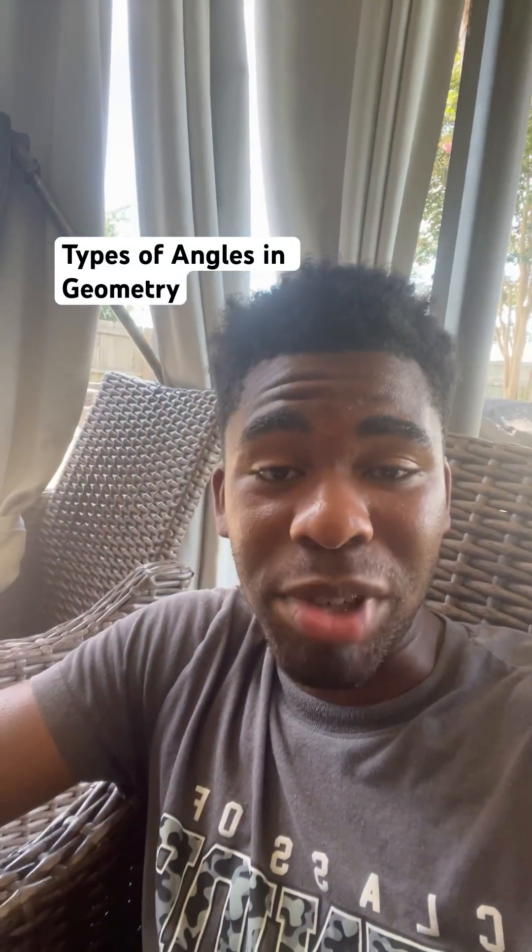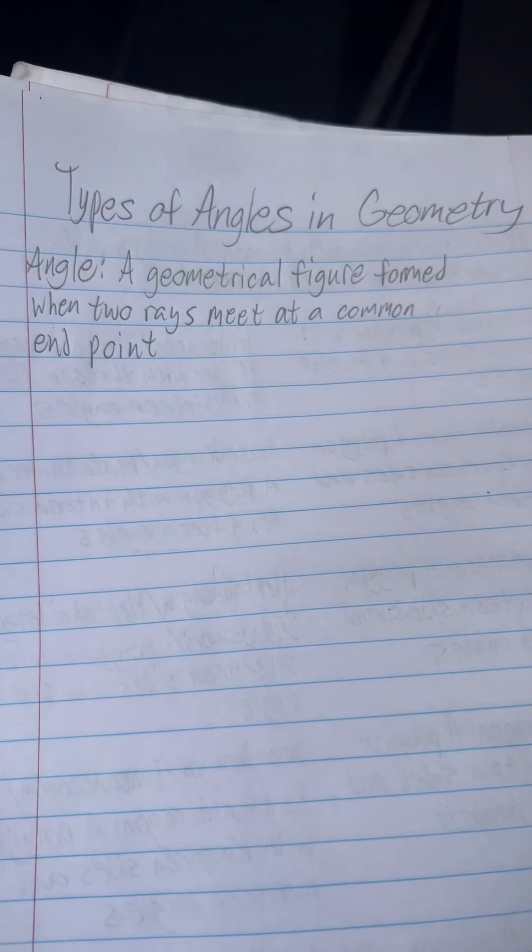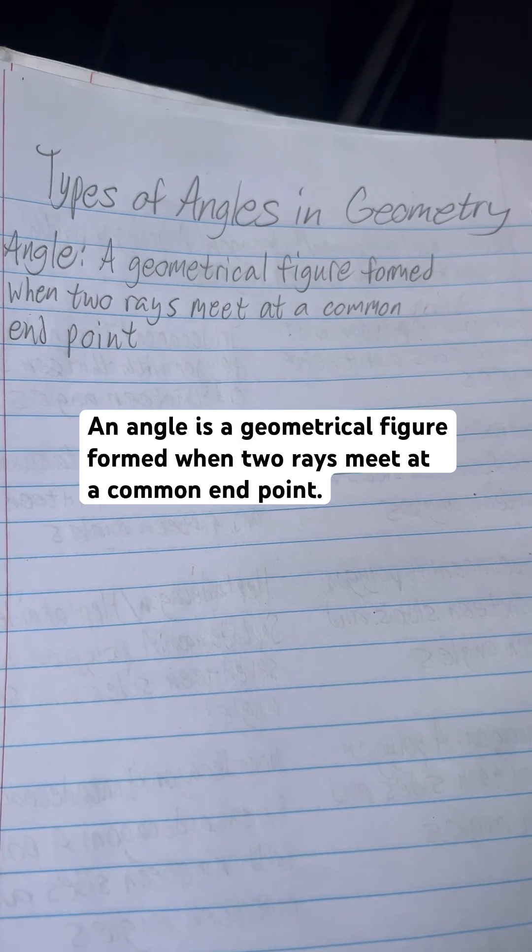Let's go over the types of angles in geometry. An angle is a geometrical figure formed when two rays meet at a common endpoint.